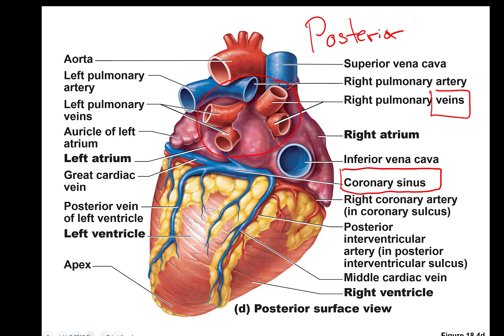When you do the heart dissection you have to find these, but often they get chopped off the heart and all you end up seeing is a big hole. The way to tell that's where the pulmonary veins were is to put a probe through that hole — it should end up in the left atrium, because that's where these blood vessels were returning the blood to. They're colored red because they're returning from the lungs where they picked up oxygen.